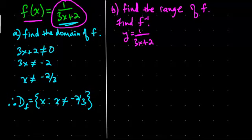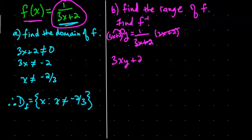So, let's multiply by 3x plus 2 on both sides. Anything we do to one side of the equation, we have to do it to the other side. Okay? Now, we see the 3x plus 2's cancel here. And, here the y distributes to both of them. So, we get 3xy plus 2y.